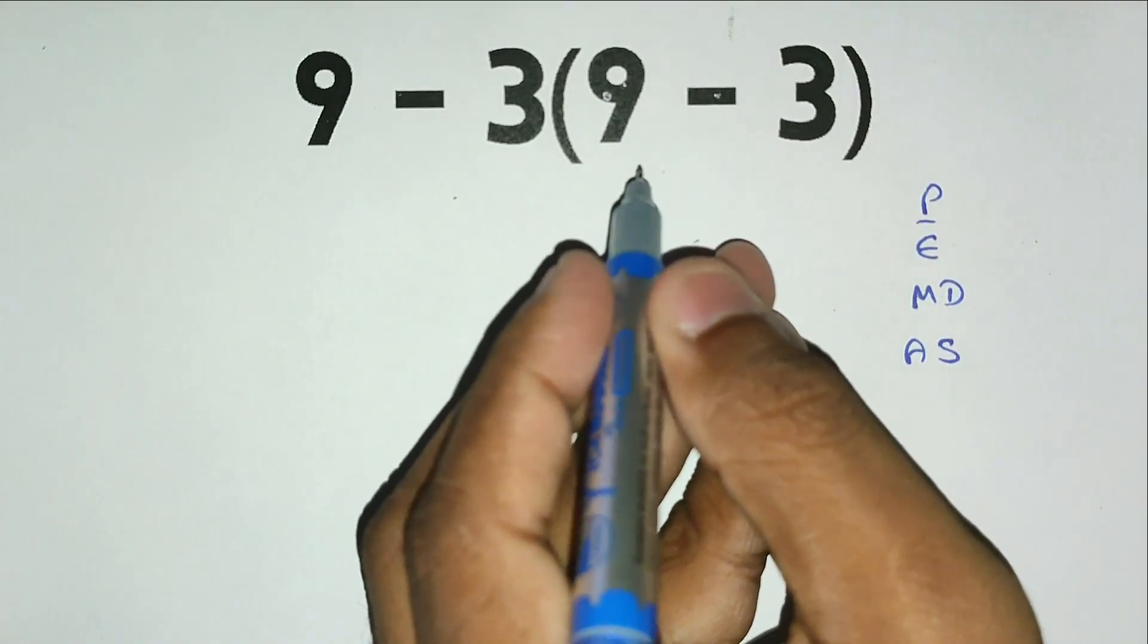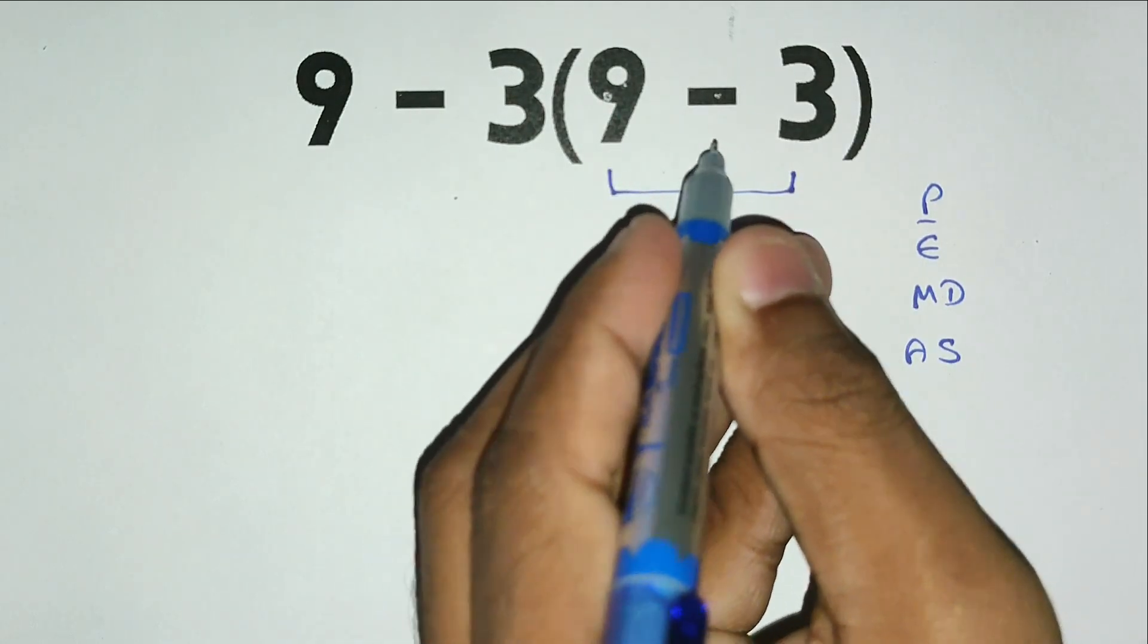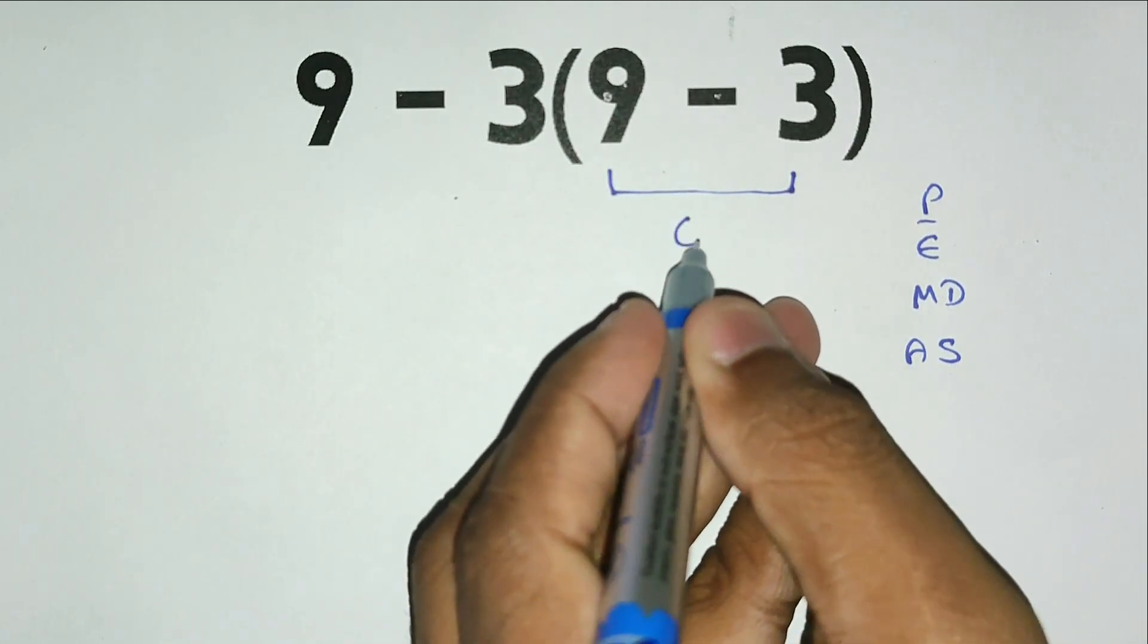Now the expression looks like this: 9 minus 3, and the parenthesis mean multiplication, and 6.